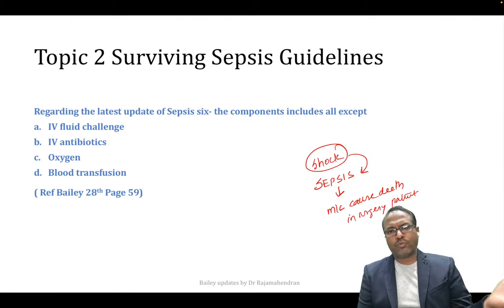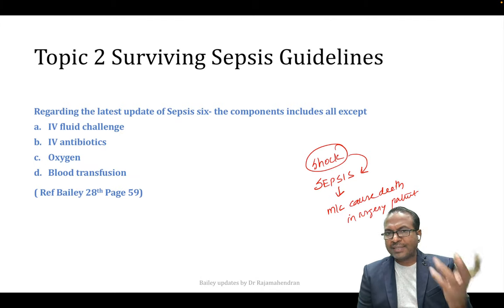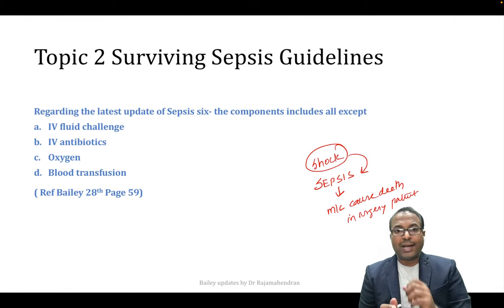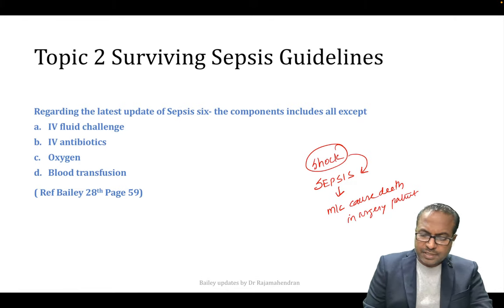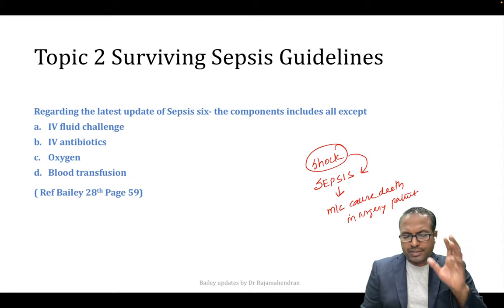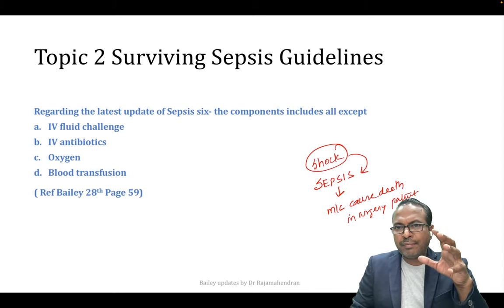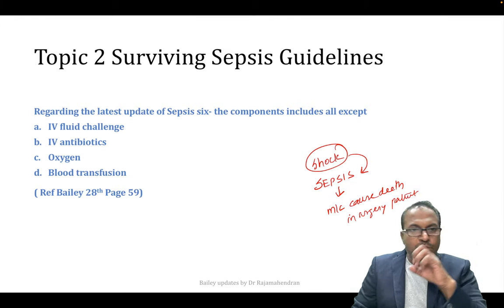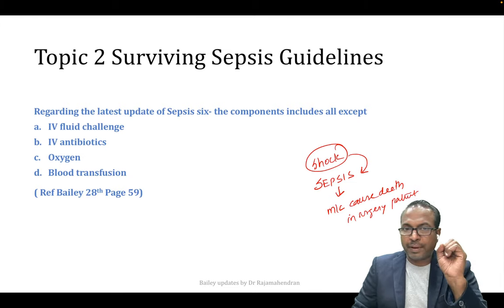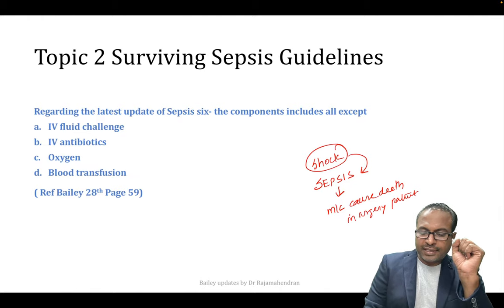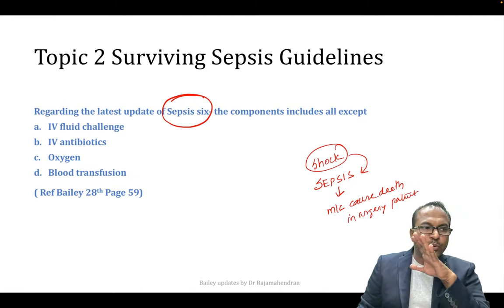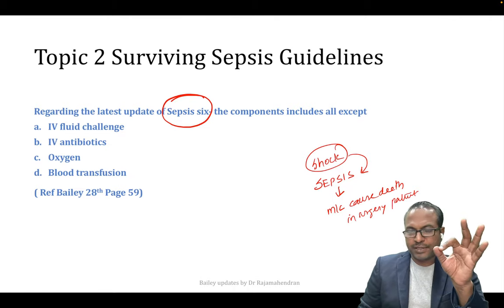Previously qSOFA and SIRS criteria were used. Many criteria were already discussed in books. A new guideline simplifies this — the latest update is the Sepsis 6 bundle, because surgeons need simple criteria to remember. The guidelines are becoming more simplified.